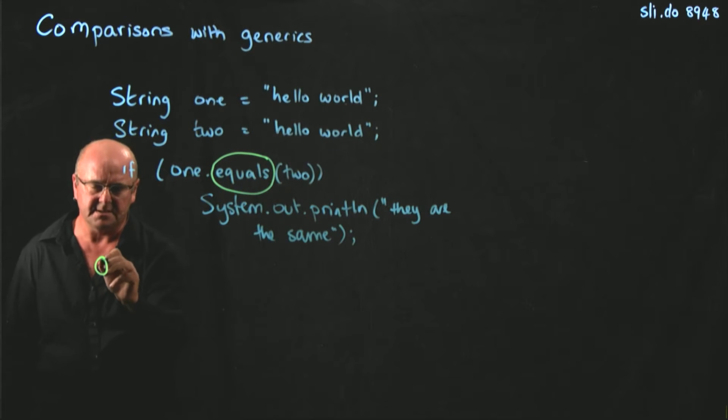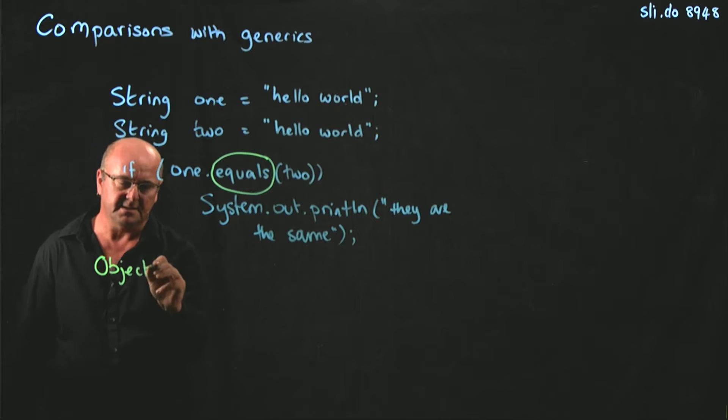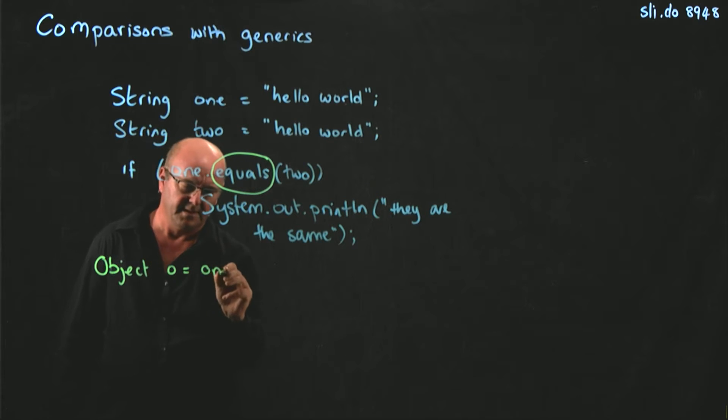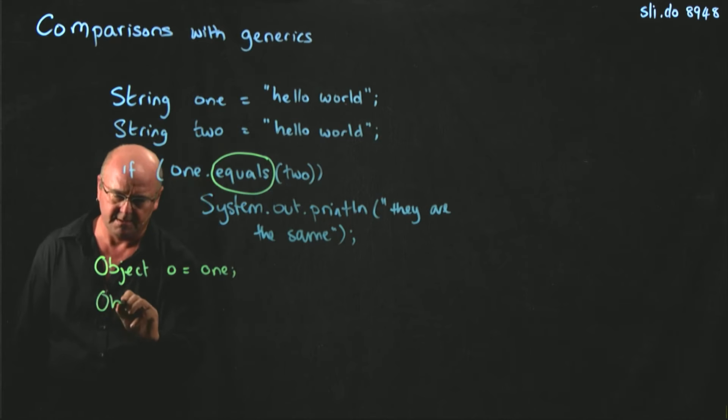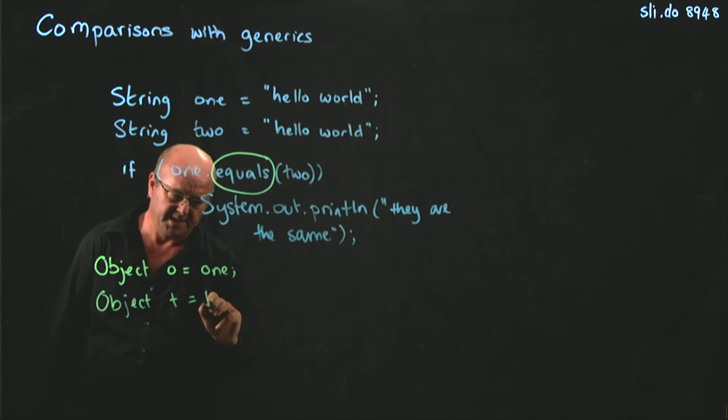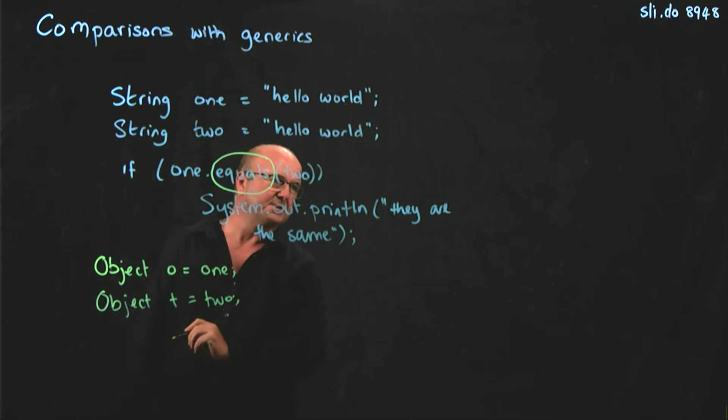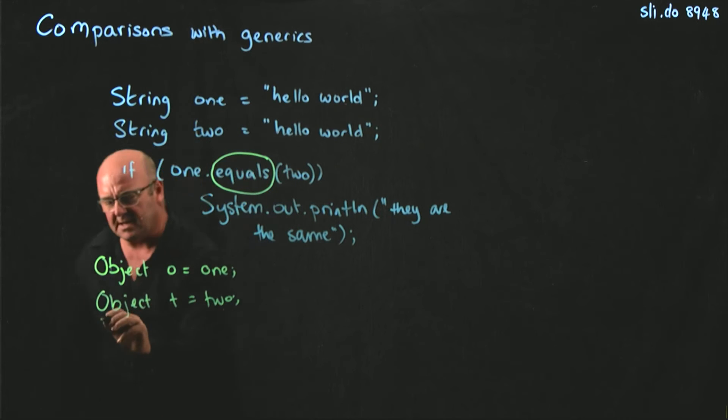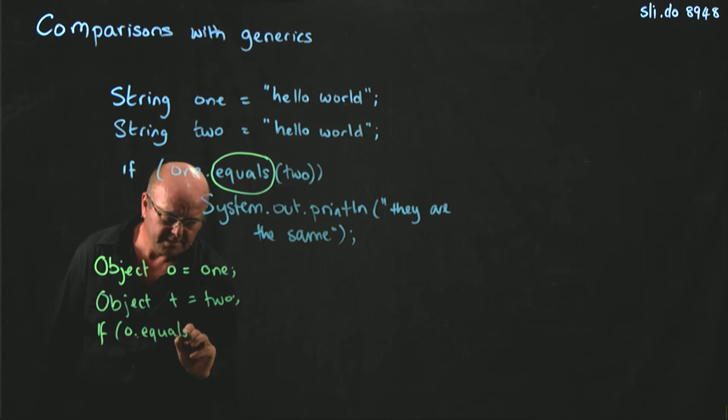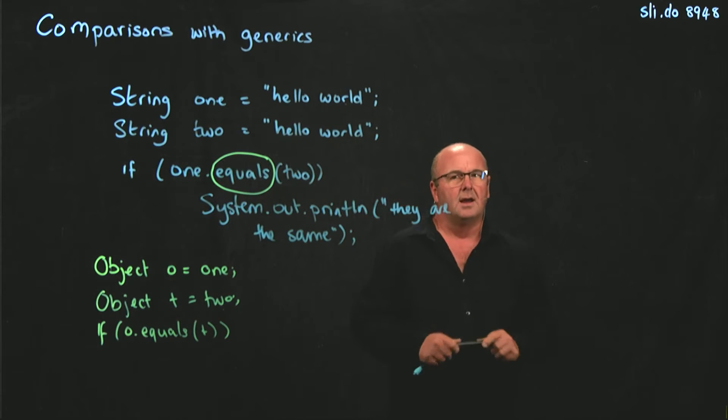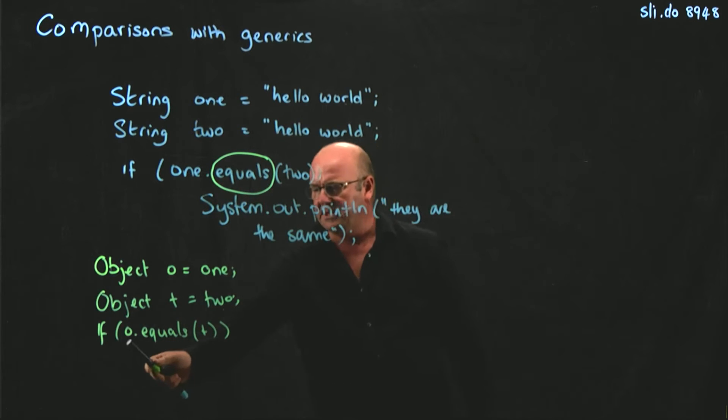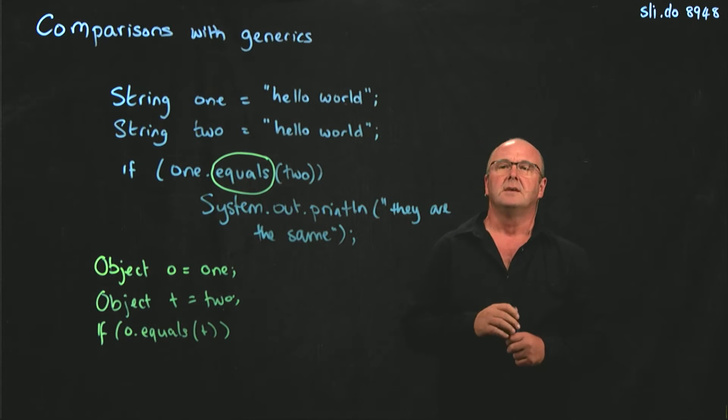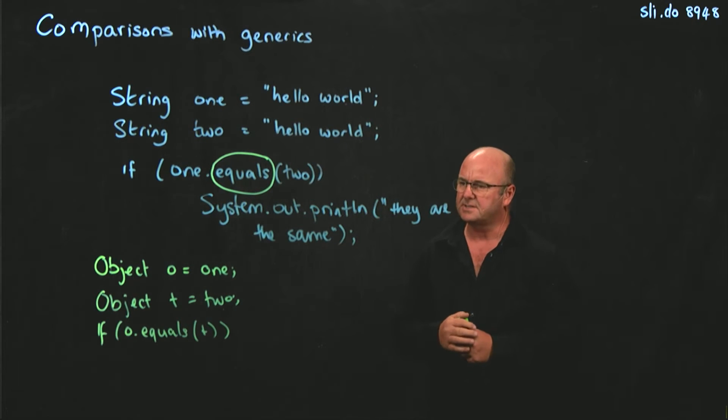So if I have two objects, let's just say I cast these two things. So it's just going to cast them as objects and say we're really doing these as objects. How does equals compare two objects? It compares the memory address. Absolutely.